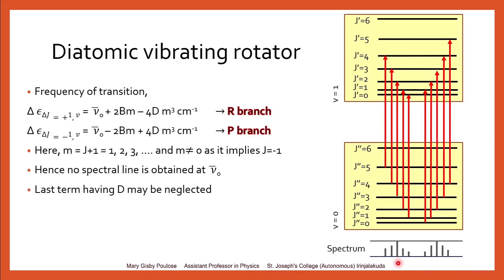This is the nature of the spectrum obtained, showing the R branch and the P branch. The center has no spectral line — it is called the Q point. On the right side we have lines R0, R1, R2, R3, R4, etc., and on the left side lines P1, P2, P3, P4, P5, etc. The line R0 is the first R branch line starting from J = 0 to 1; P1 is the first P line starting from J = 1. There is no P0 line since ΔJ = −1 cannot start from J = 0.